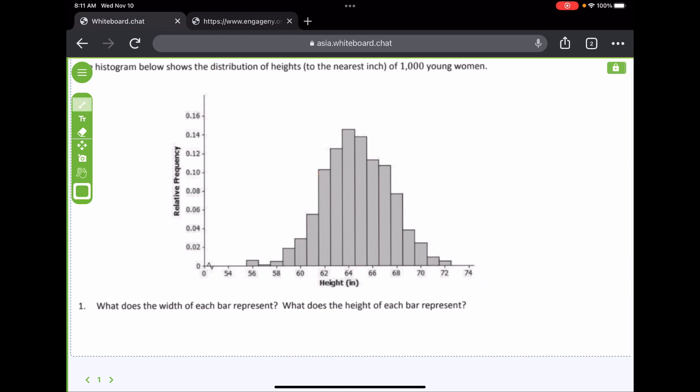So, the width of each bar would be what? But what does it mean that it's one bar? One, that is one. It's that inch of height, right? So, the width of the bar is one inch of height. Okay? For these 1,000 young women.